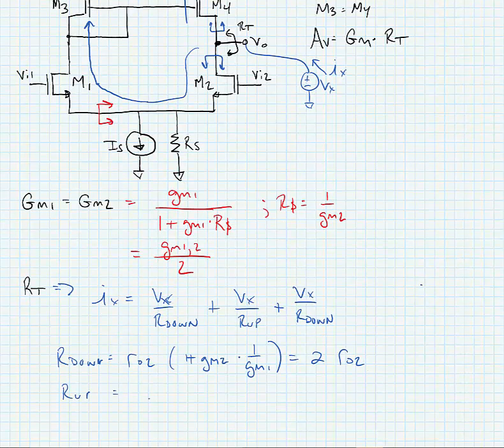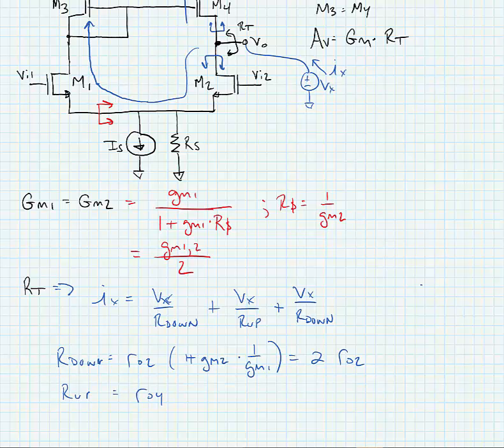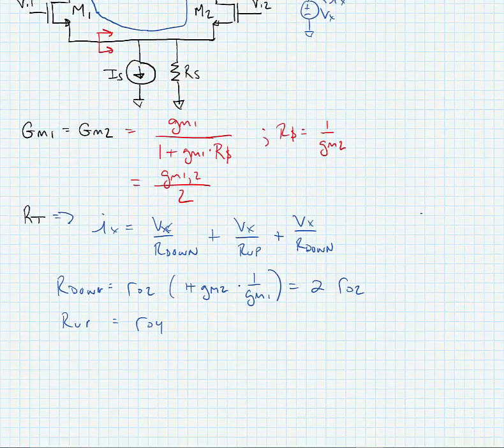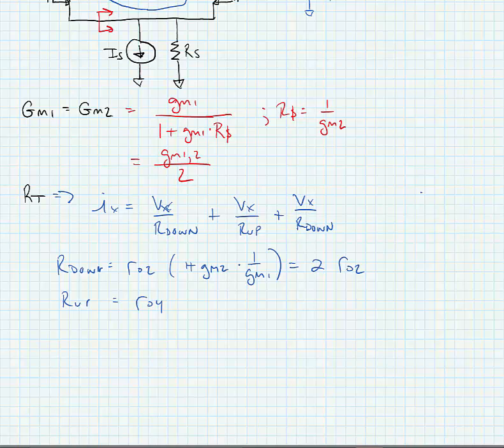R up is equal to R04. If we substitute these into the expression that we derived for KCL at the output node, then we find ultimately that Ix is equal to Vx over R02 plus Vx over R04.